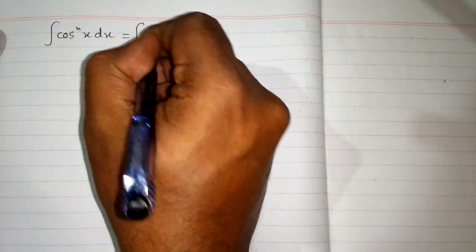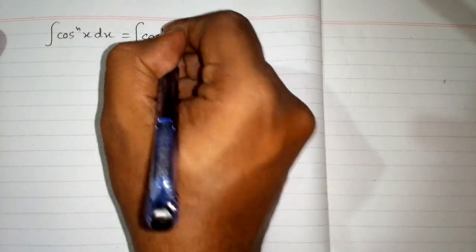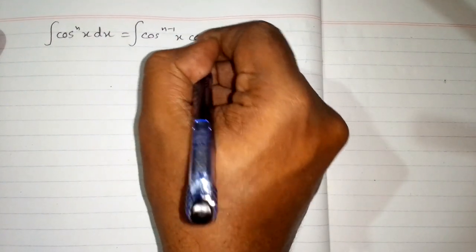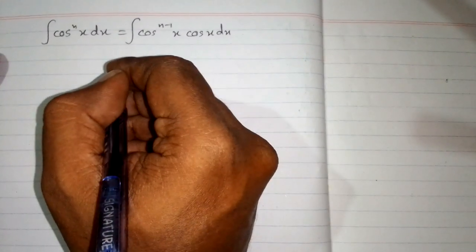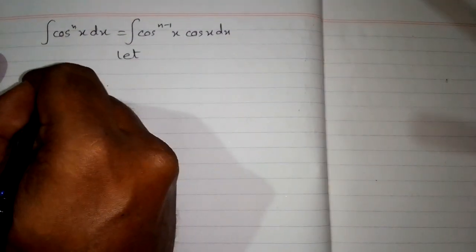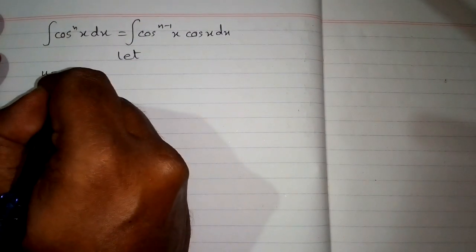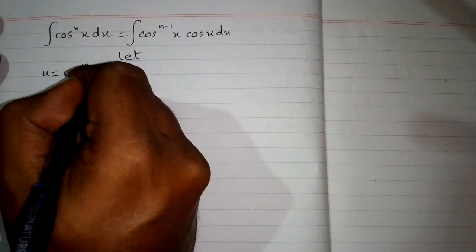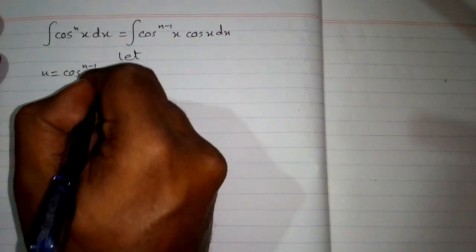In this video we will find the integral of cosine of x raised to the power n. We can write this integral as cosine raised to the power n minus 1, multiplied by cosine of x. Now we will integrate this function by using integration by parts, so let u equal to cosine raised to the power n minus 1.